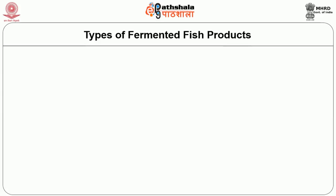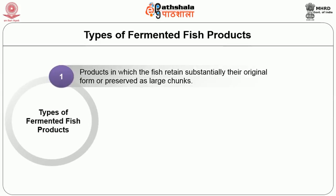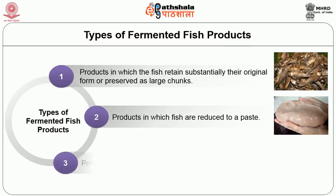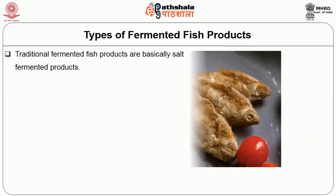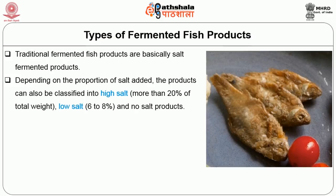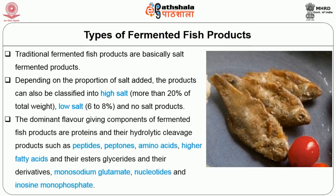There are three types of fermented fish products: 1. Products in which the fish retains substantially its original form, preserved as large chunks. 2. Products in which fish is reduced to a paste. 3. Products in which fish is reduced to a liquid. Traditional fermented fish are basically salt fermented products. Depending upon the proportion of salt added, products can be classified into high salt (more than 20% of total weight) or low salt (6-8% of total salt). The dominant flavour-giving components are proteins and their hydrolytic cleavage products such as peptides, peptones, amino acids, higher acids and their esters, glycerides and their derivatives, monosodium glutamate, nucleotides and inosin monophosphate.